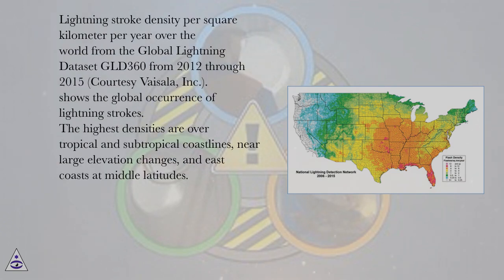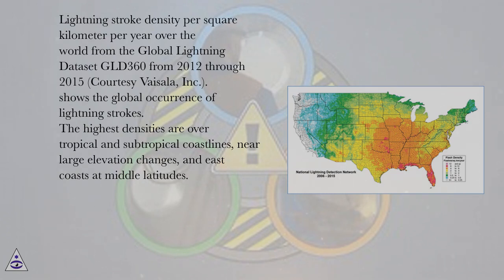Lightning stroke density per square kilometer per year over the world from the global lightning data set GLD360 from 2012 through 2015, courtesy Vashala Inc. This shows the global occurrence of lightning strokes.